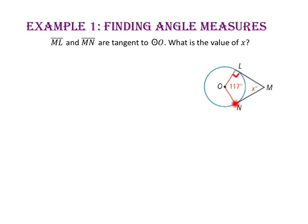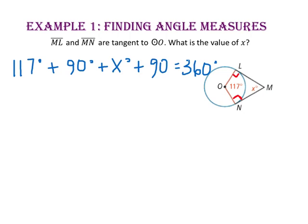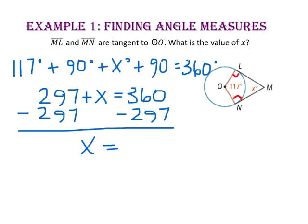Since segment MN is also a tangent to circle O, it is perpendicular to radius ON at point N. That means angle N is also 90 degrees. Since polygon LMNO is a quadrilateral, its interior angles have a sum of 360 degrees. So 117 plus 90 plus X plus 90 equals 360. Combining like terms, 297 plus X equals 360. Subtract 297 from both sides, and X equals 63.